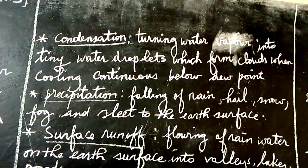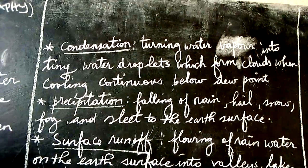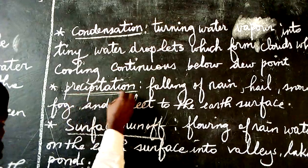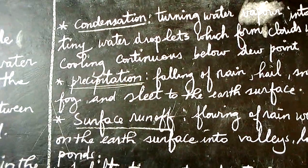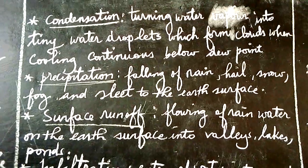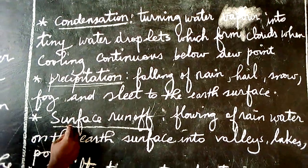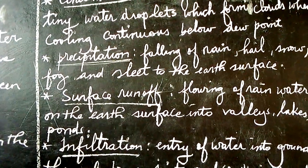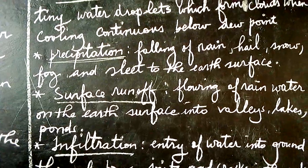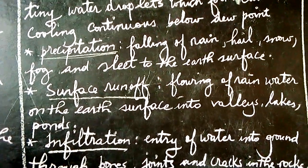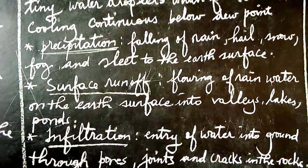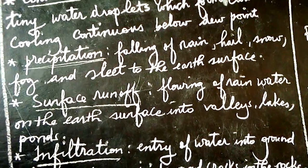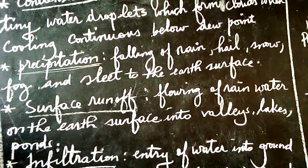The falling of rain, hail, snow, fog, and any other kind of precipitation onto the surface is referred to as precipitation. After it rains, some of the rainwater will sink and penetrate into the ground, while others will flow on the surface of the earth. That flow on the surface is what we call surface runoff.